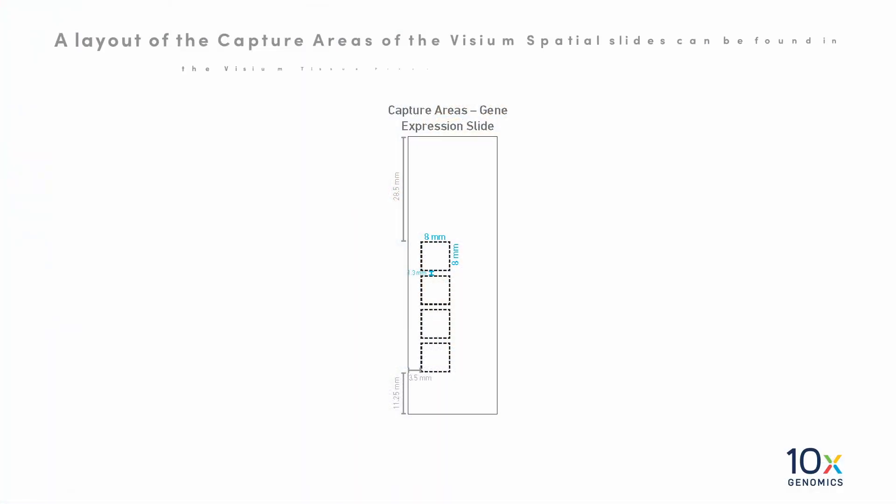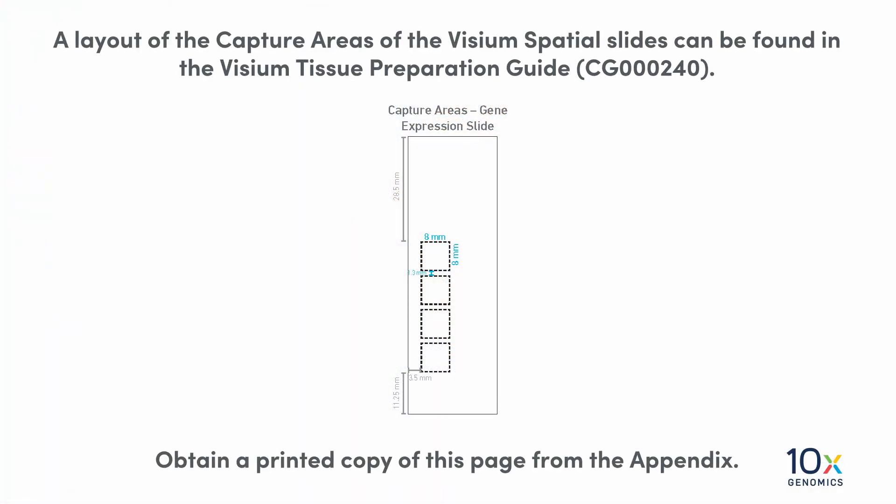We are ready to practice section placement on plain glass slides. A layout of the capture areas of the visium spatial slides can be found in the visium tissue preparation guide. Obtain a printed copy of this page from the appendix.